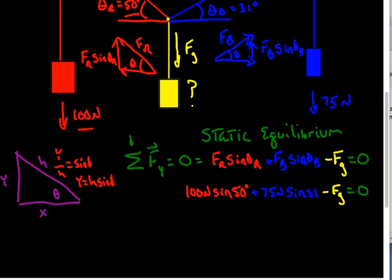Now we can go ahead and hit things on our calculator, and 100 sine of 50 is 76.6 newtons. And 75 times sine of 31 is going to be 38.6 newtons.